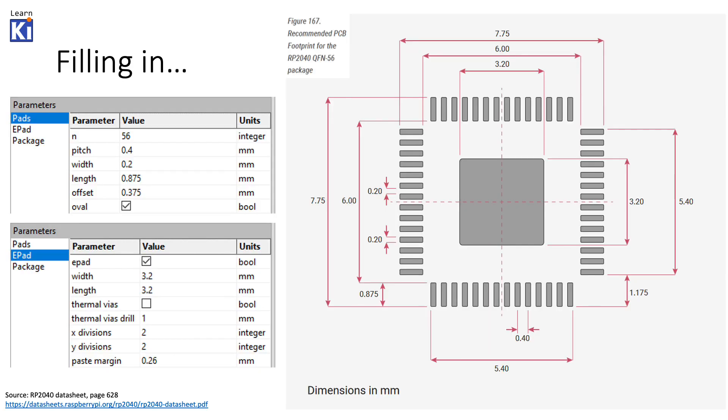So, to fill it in. The numbers are obvious. We got them from the description. We have the pitch, which is the distance between the pads or from the center of the pads. The size of the pad itself. The length from here to here. And the offset. Like I said, it's this 0.75 minus 7. 7 is the size of the package. So, then we just need to divide it by 2. That's what we get.